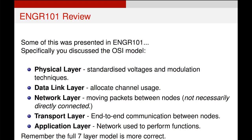Your physical layer will have a standardized series of voltages, and this is the layer at which ones and zeros will be sent. The layer above that is the data link layer — that's where we allocate channel usage, and that's where things like MAC addresses come into play. The next layer up is the network layer, which deals with the movement of packets and IP addresses. The transport layer controls end-to-end communication between hosts on the network, which means things like TCP or UDP — your communication protocol.